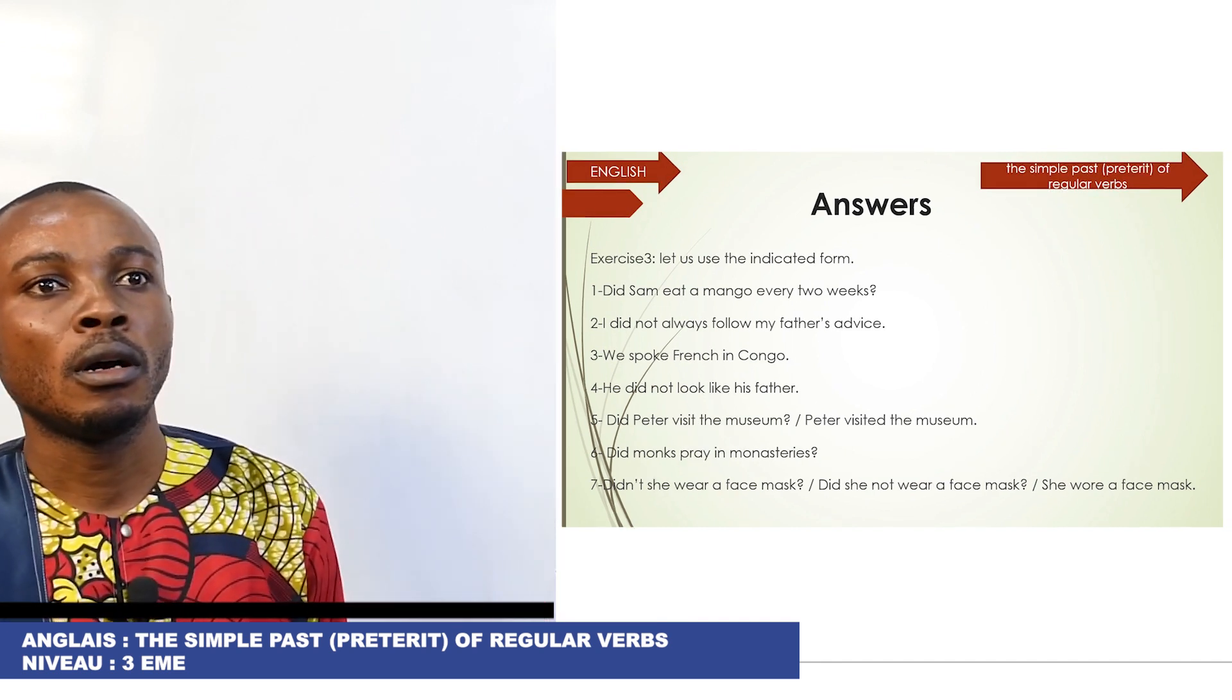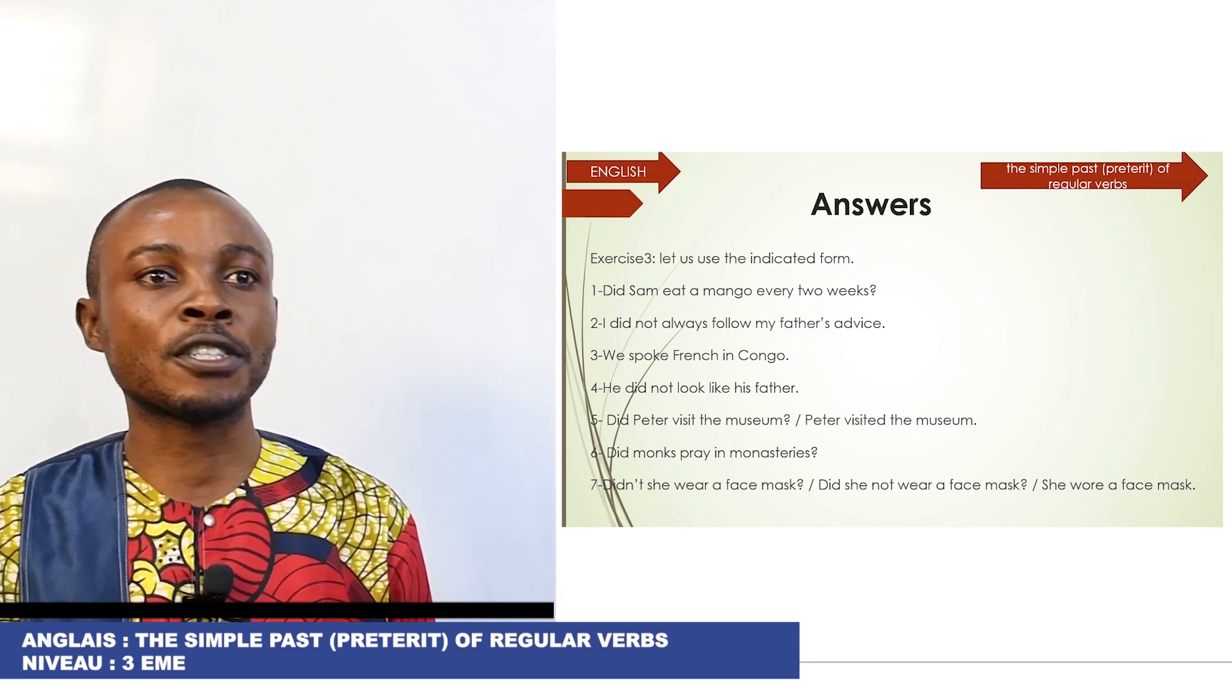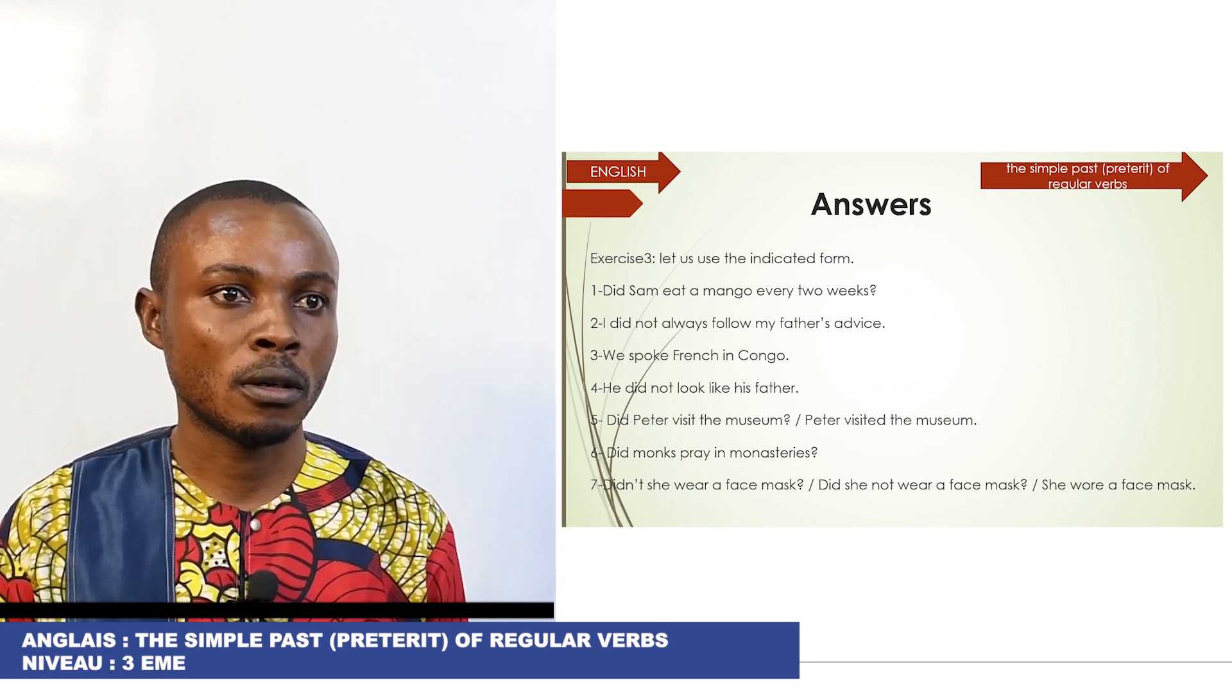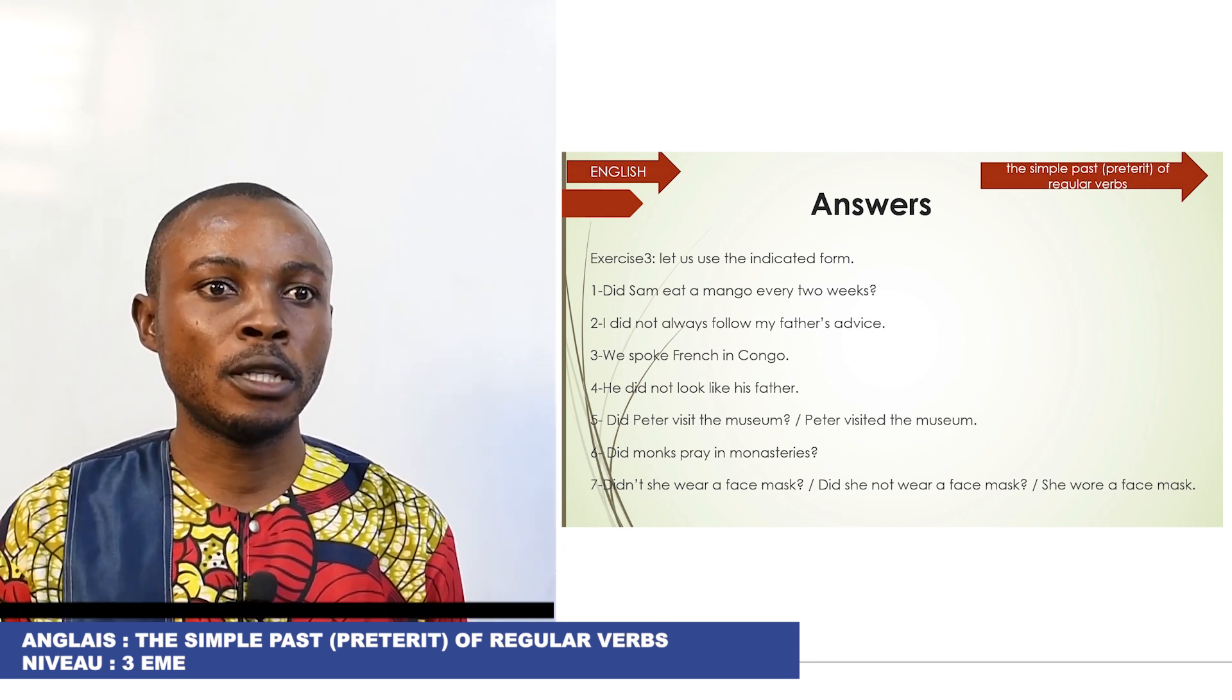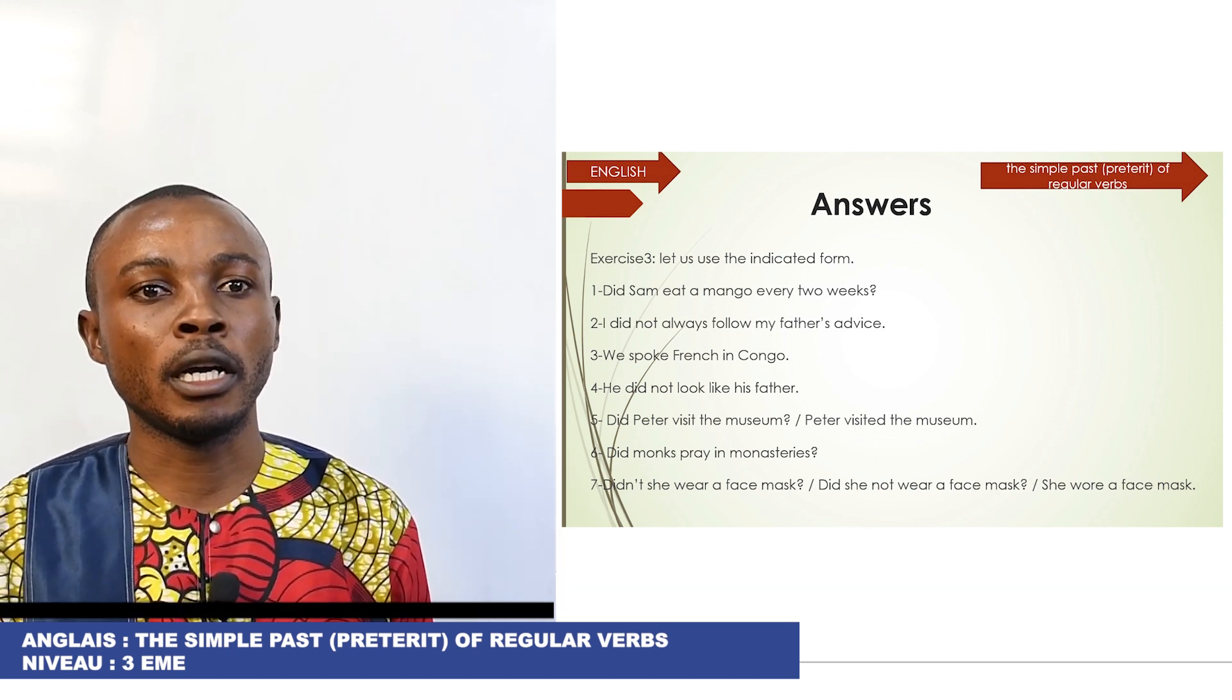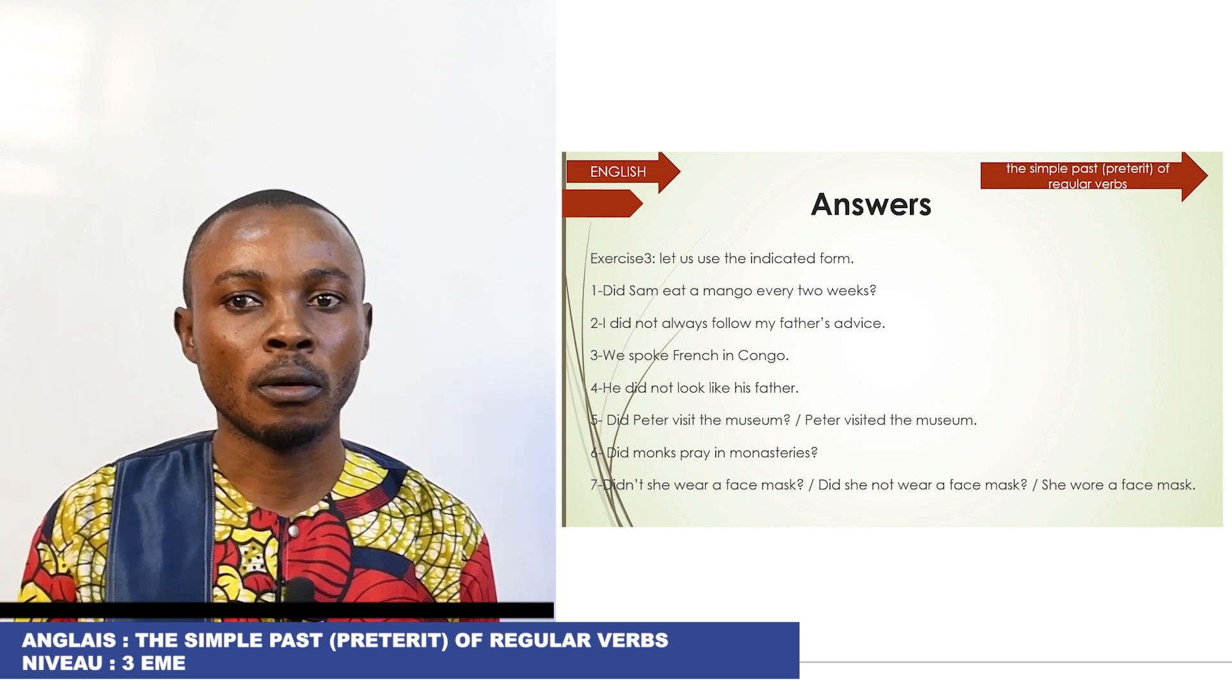The answer for exercise number three. If you found it, congratulations. Number one: Did Sam eat a mango every two weeks? Two: I did not always follow my father's advice. Three: We spoke French in the Congo. Four: He did not look like his father. Five: Did Peter visit the museum? Peter visited the museum. Six: Did monks pray in monasteries? Seven: Didn't she wear a face mask? Did she not wear a face mask? She wore a face mask.